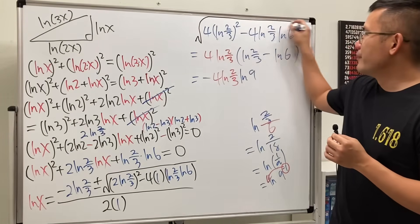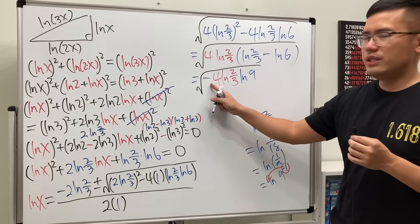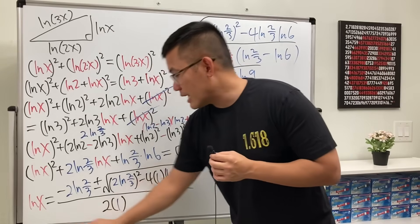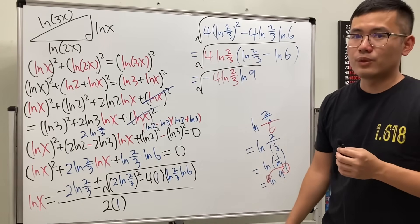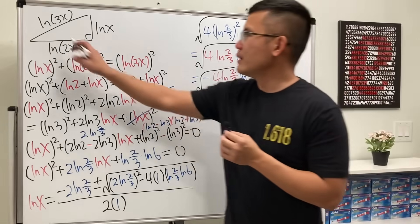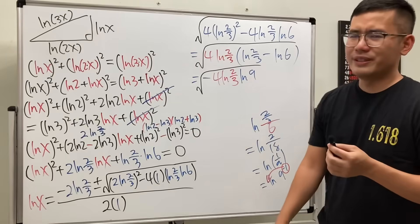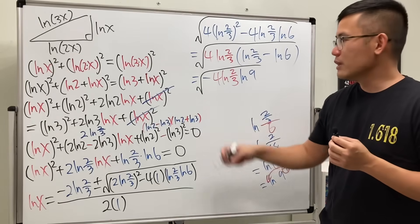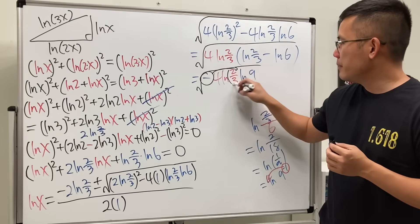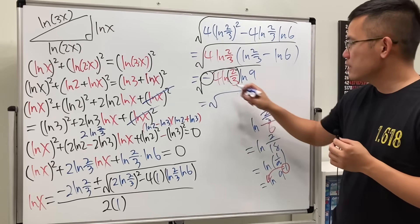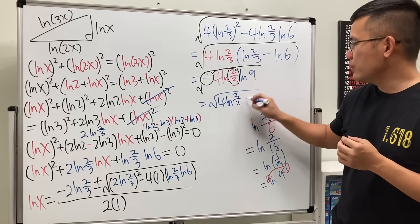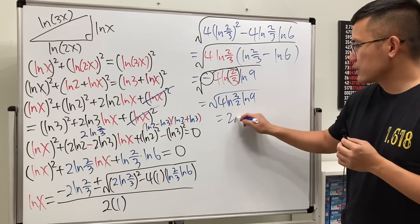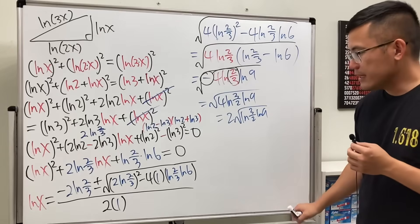We still have the square root around this. Since 2/3 < 1, ln(2/3) is negative, so the product −ln(9)·ln(2/3) is actually positive — no complex numbers. We can rewrite it as 4·ln(3/2)·ln(9), taking the negative inside. So the square root simplifies to √(4·ln(3/2)·ln(9)) = 2·√(ln(3/2)·ln(9)).